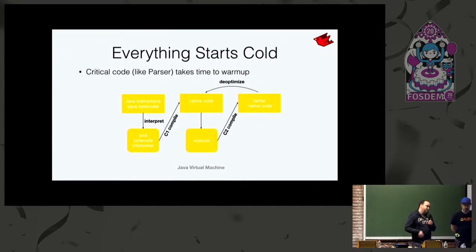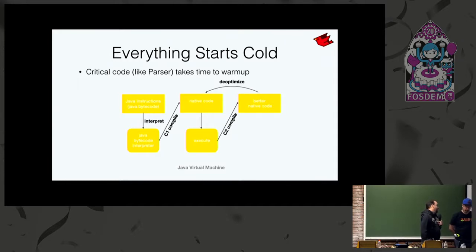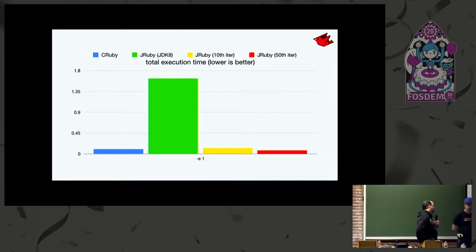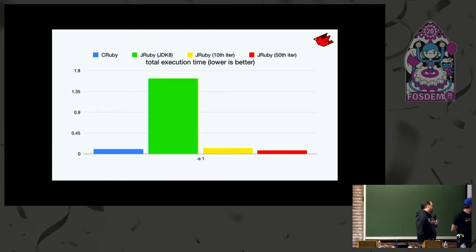At startup, almost everything we're loading is only going to get called once, and in Java that means it's stuck in the bytecode interpreter — not many things will actually make it to C2. This graph illustrates the point: with CRuby it takes almost no time. JRuby was about 10 times slower when this slide was made. But when we wrapped invoking a Ruby runtime in a loop, by the 10th iteration we're catching up to CRuby, and by the 50th we're beating it.